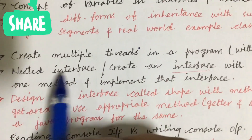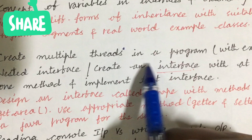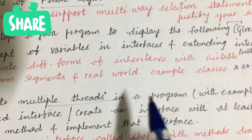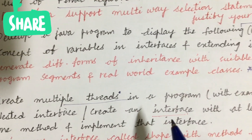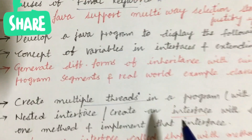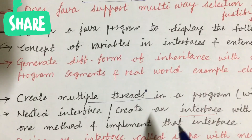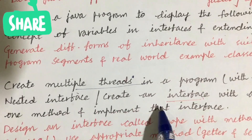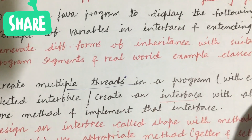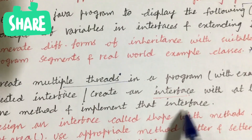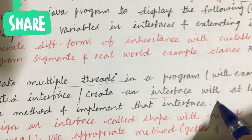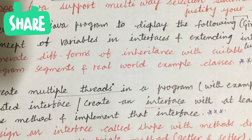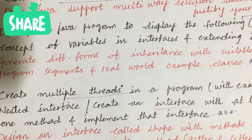Create multiple threads in a program with an example — the concept of threads is also a key question you can expect. Explain the nested interface: create an interface with at least one method and implement that interface. This may also be a B-part question.